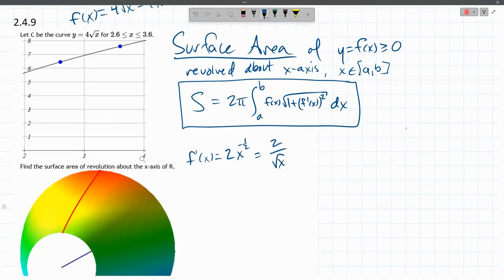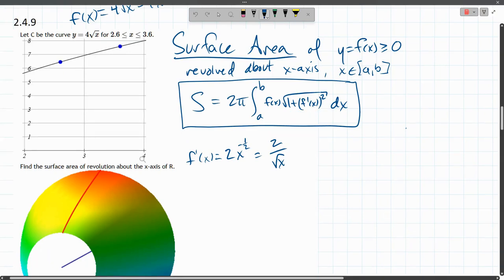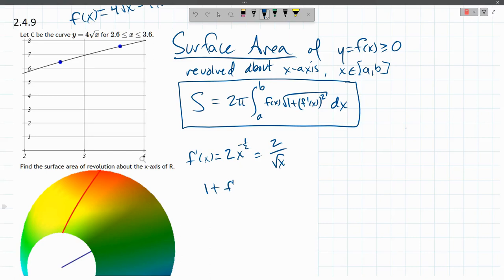All right, let's go ahead and do one plus this squared. One plus f prime, we're squaring f prime. So it's one plus this squared. So that's 4 over x.